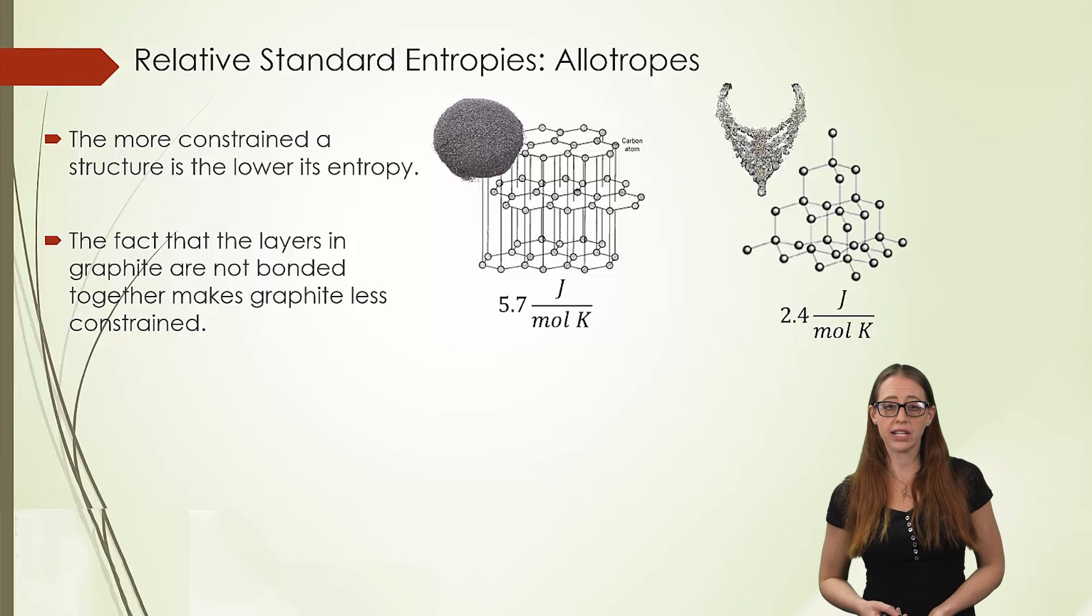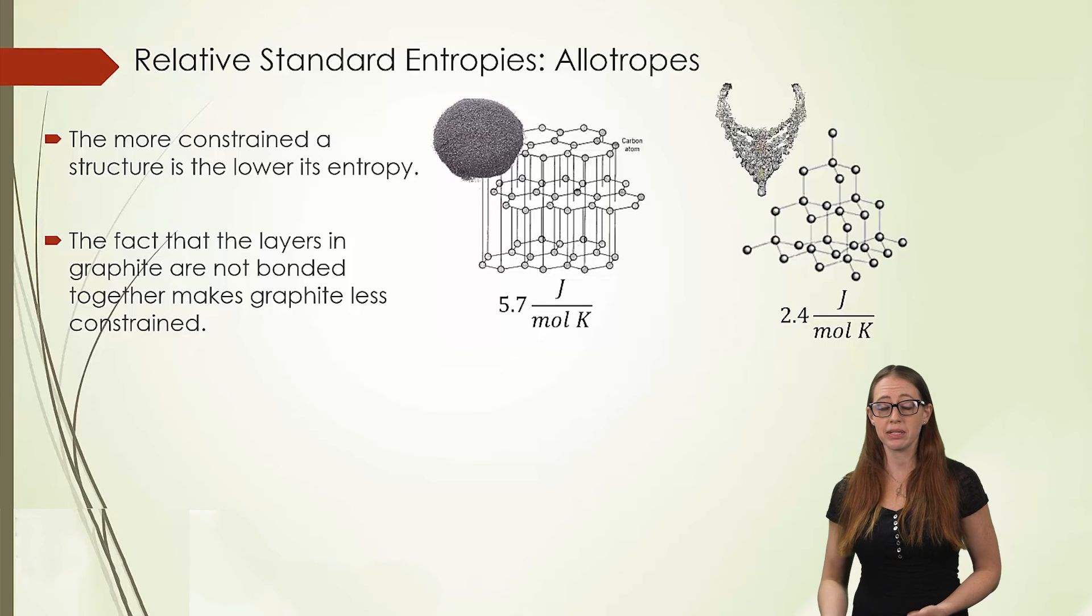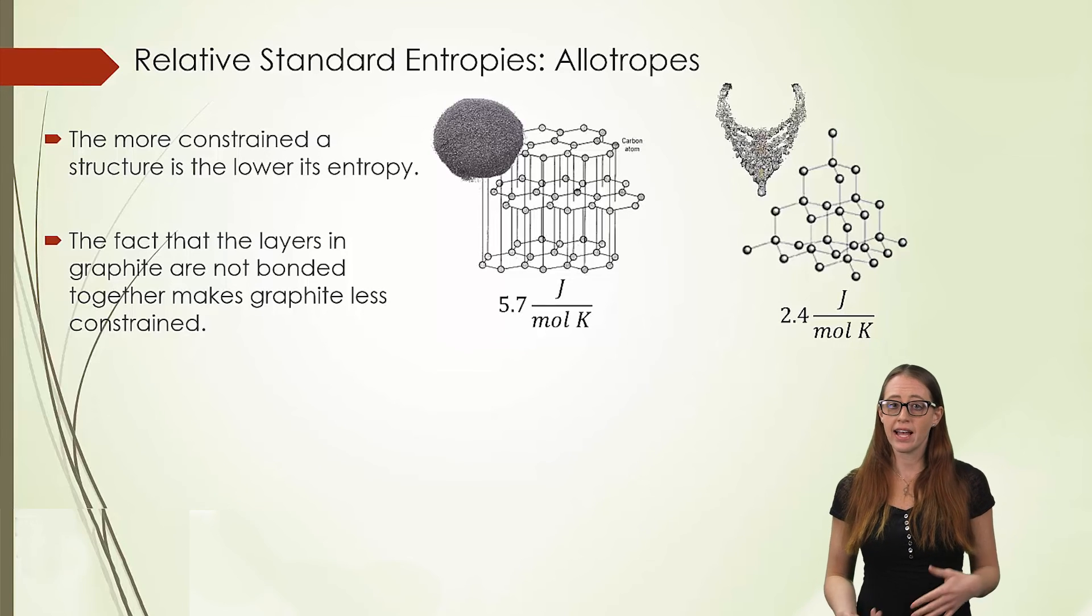Therefore, if we look at the entropy values, diamond is going to have a much lower entropy value because it is much less random, or it is much more constrained. Whereas graphite has the much higher entropy value because it is more random, or less constrained.